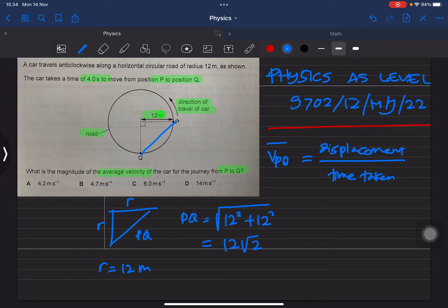Then we will use this. This is equal to 12 root 2 divided by the time taken, which is 4. So this is the same as 3 root 2. Root 2 is about 1.41, so this is about 4.2.